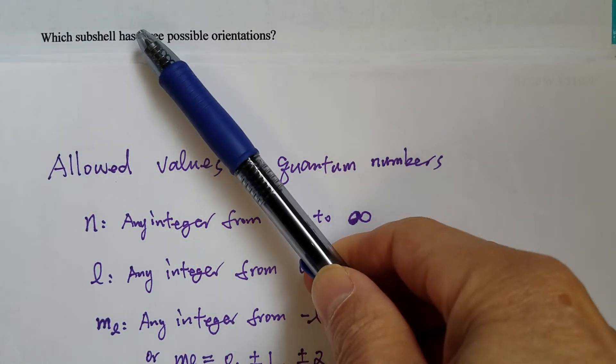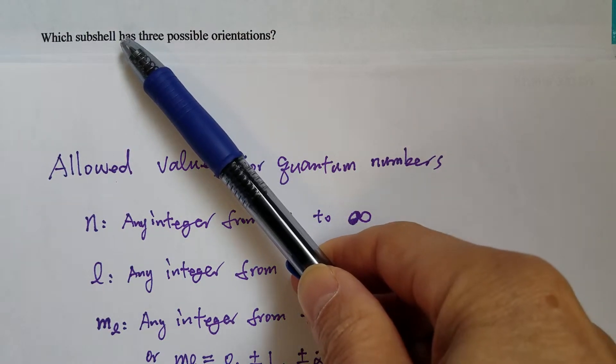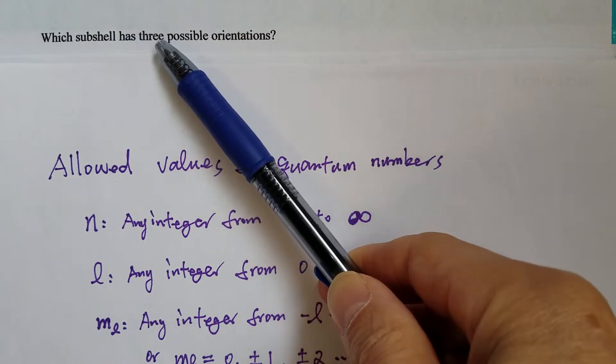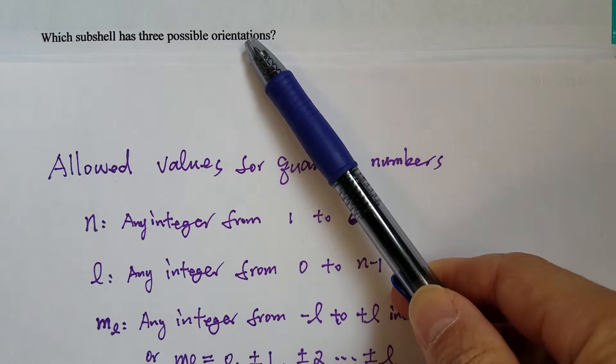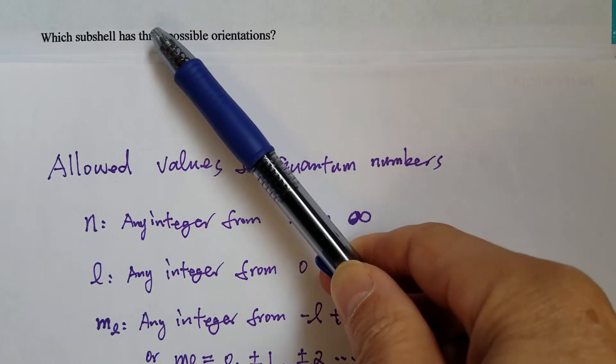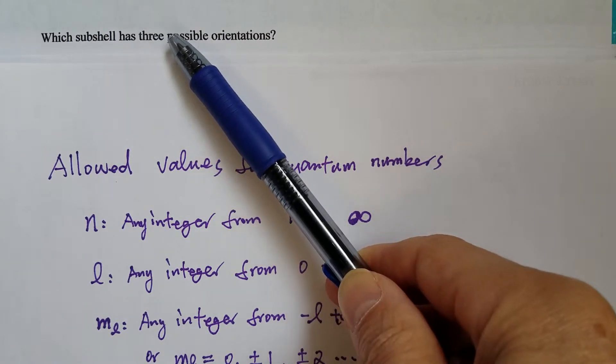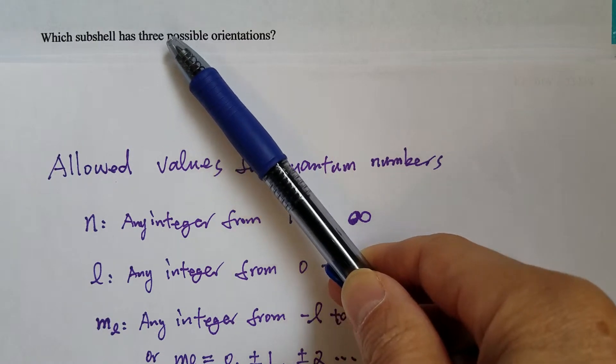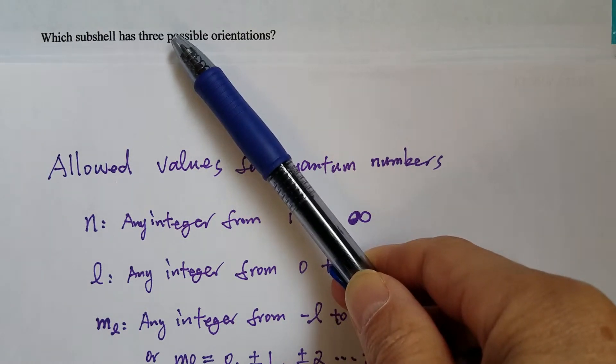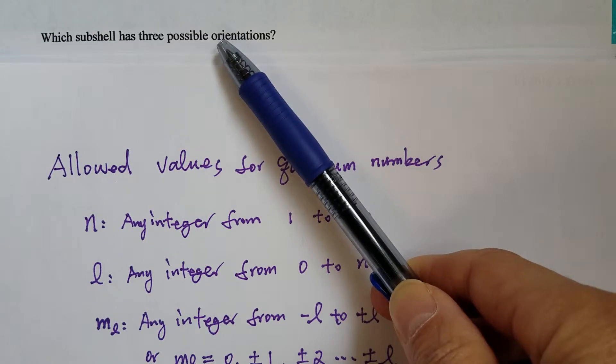So what exactly is asked in this question? Which subshell has three possible orientations? It simply means which subshell has three orbitals. We know each orbital has a different orientation in the 3D space.